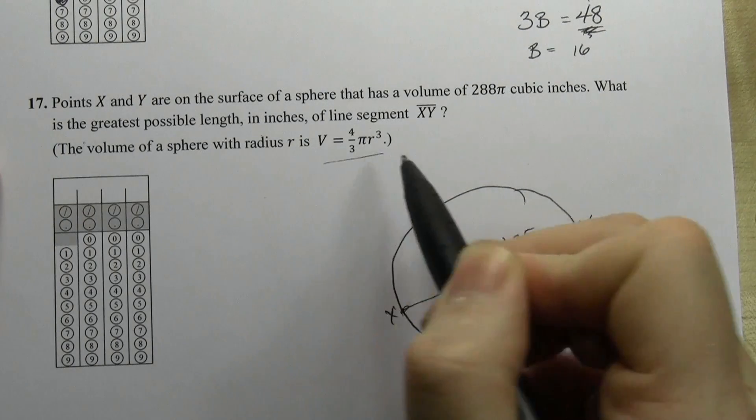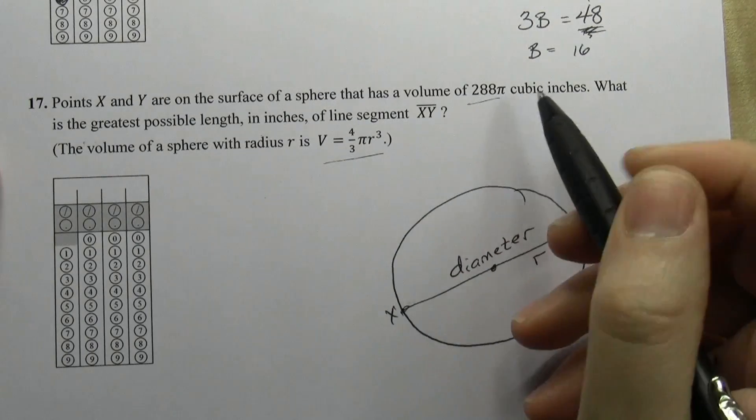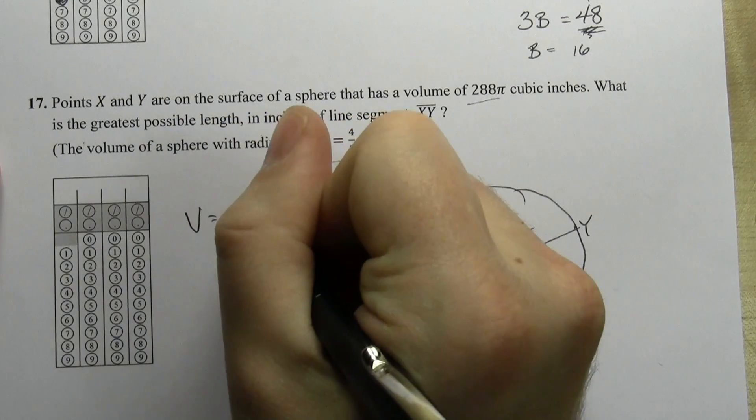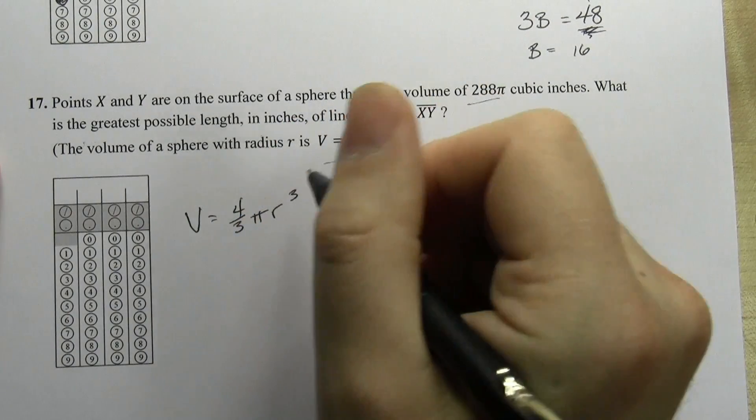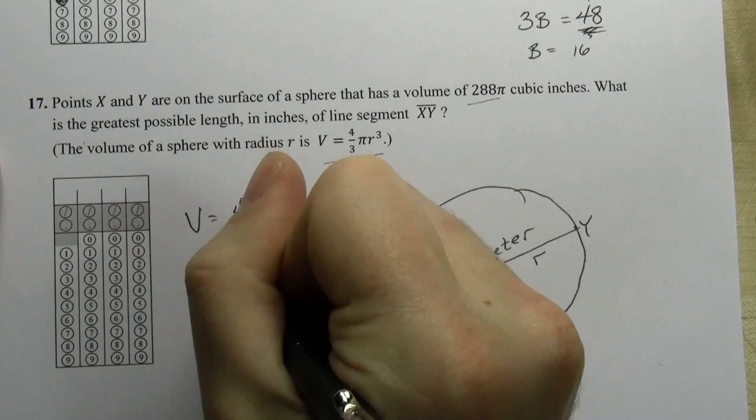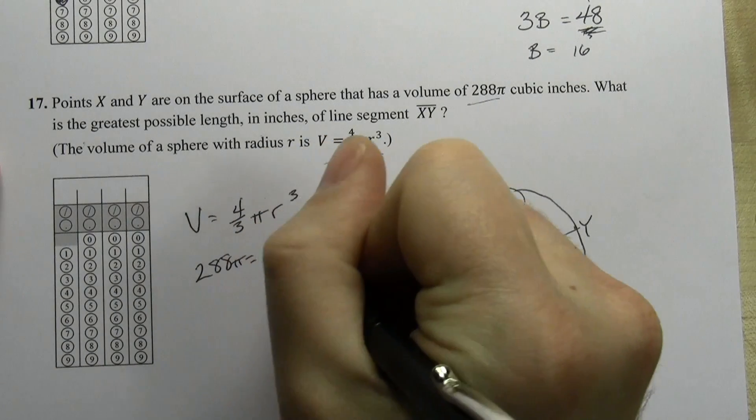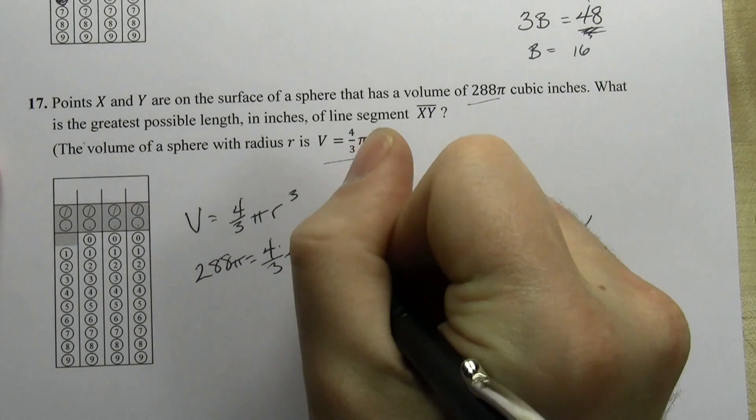And I know the way of relating radius to volume, which they give me, is this formula. So they tell you that volume is 4/3 π r³.